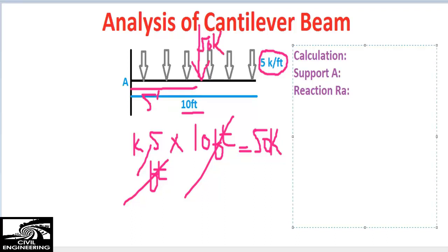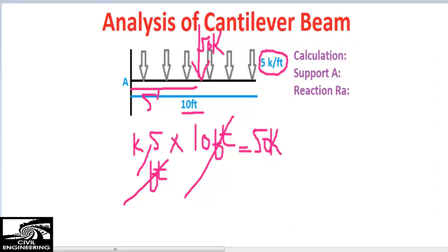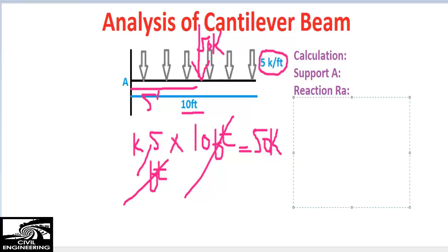So the reaction force RA will be 5 × 10, equal to 50 kips. This load will be acting at the center of the cantilever beam, 5 feet from the support.